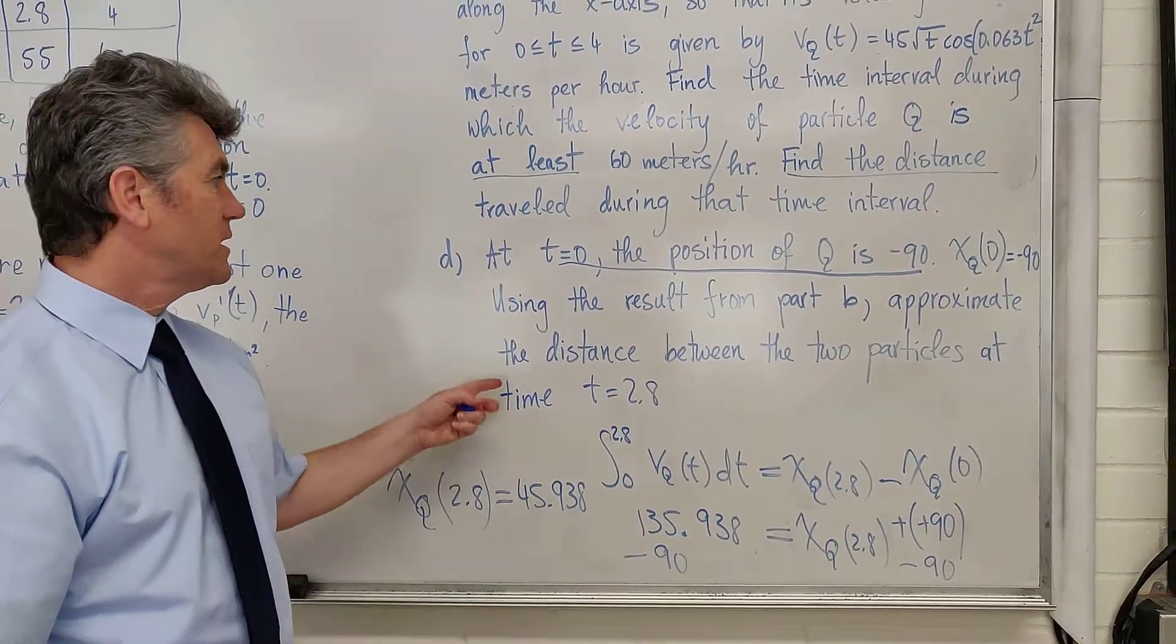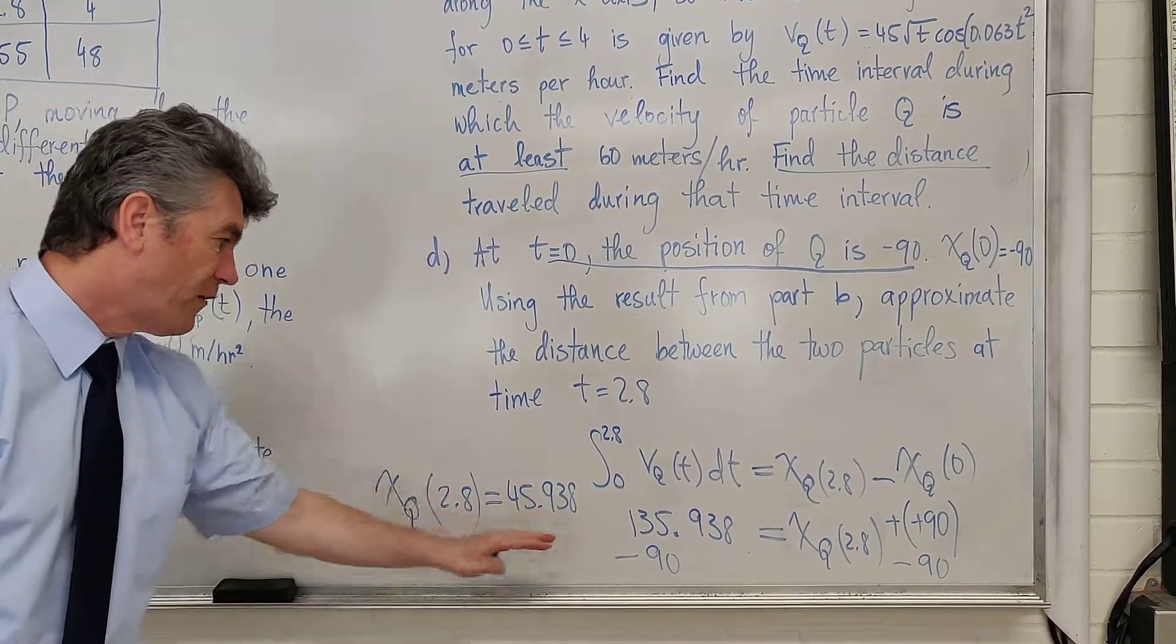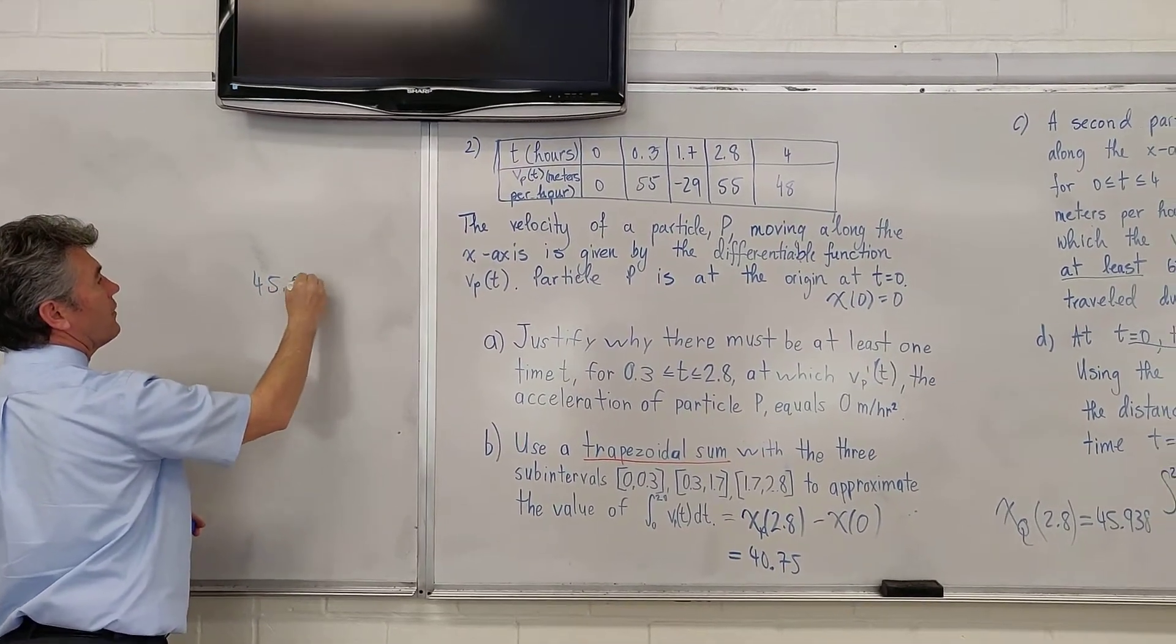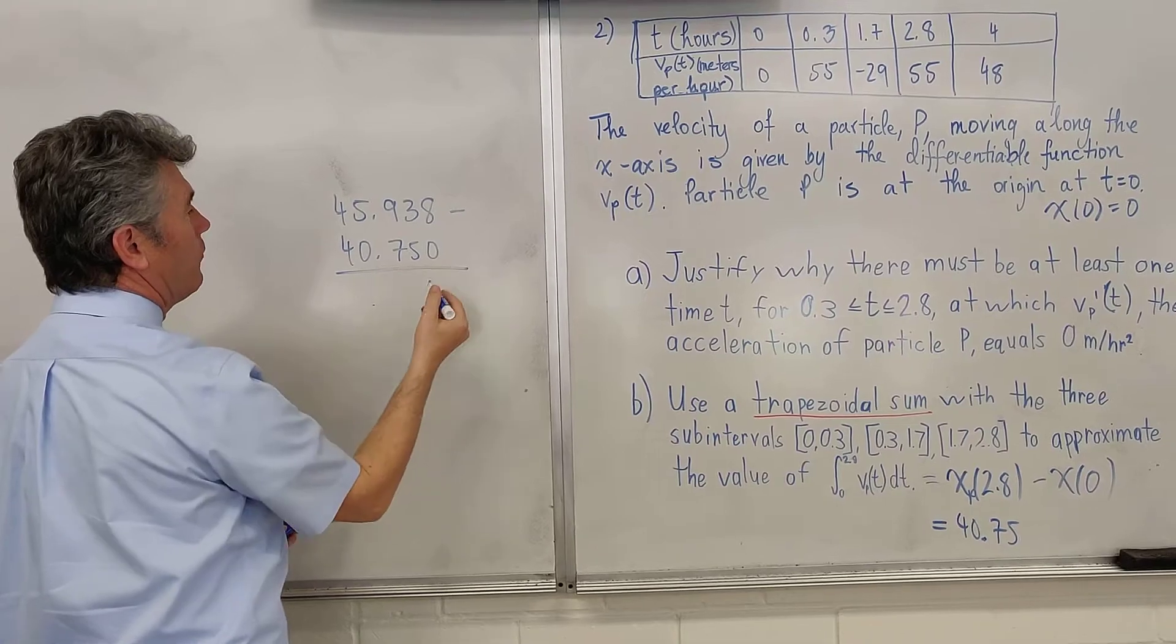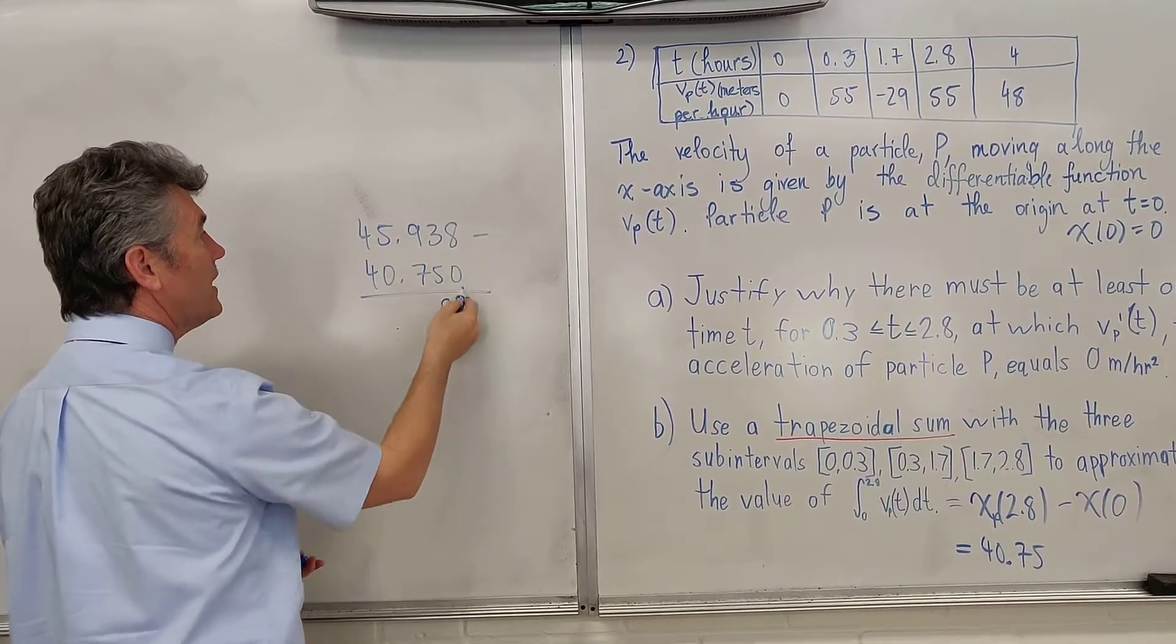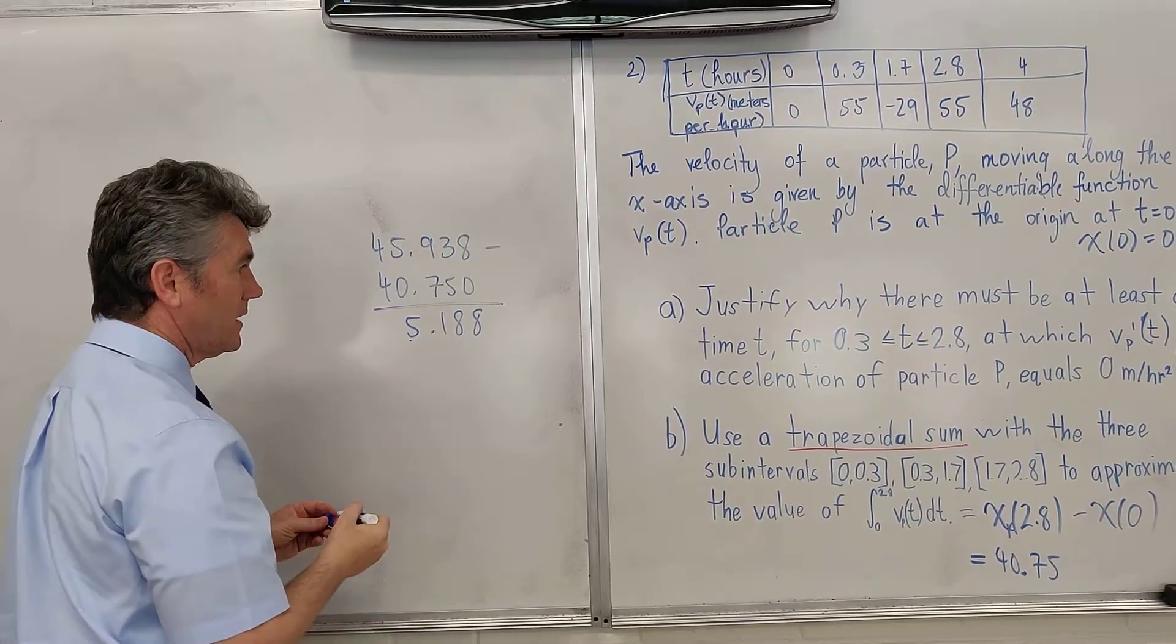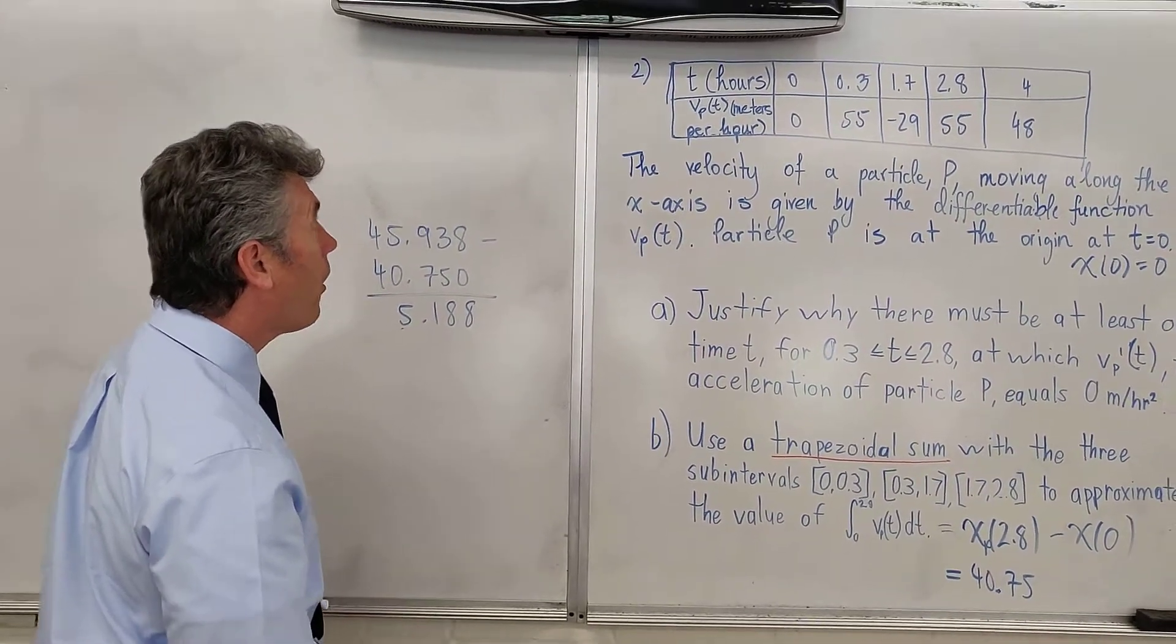What is the question asking us to do? Using the result from part B, approximate the distance between the two particles. The position of Q is 45.938, the position of P is 40.75. So the distance between them is going to be 45.938 minus 40.75. You don't need to waste your time doing this by hand, it's a calculator question. 8 minus 0 is 8, 3 minus 5 is negative, carry... It looks like at that time, the difference in their positions is 5.188. And that's it for all the calculator questions.